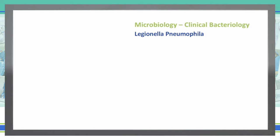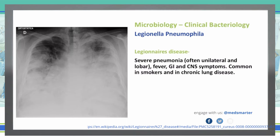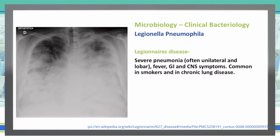Legionella pneumophila can cause two different kinds of disease. The first is Legionnaire's disease, which gives us a severe pneumonia — oftentimes unilateral and lobular — but it can develop into a very deep-seated pneumonia, as you can see in this particular patient, who has it mostly in the lower lobes on the right and almost all throughout the left side of the lungs. Not only does it cause severe pneumonia, it can lead to fever, GI, and central nervous system symptoms, all associated with Legionnaire's disease.